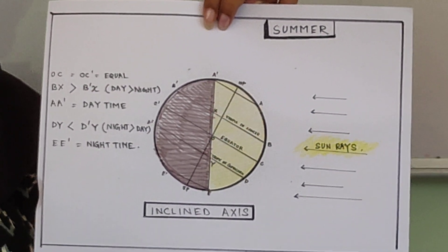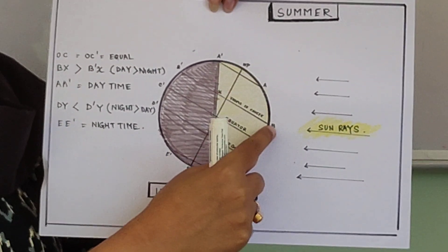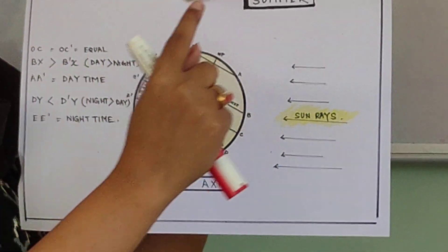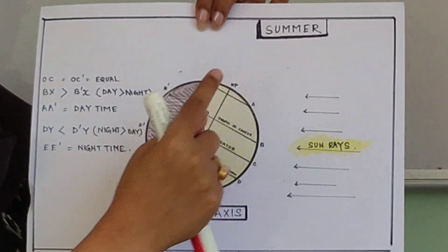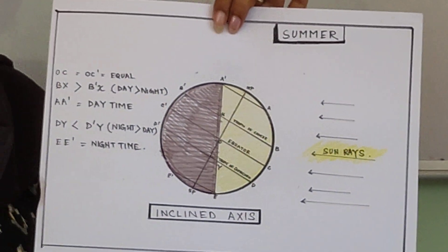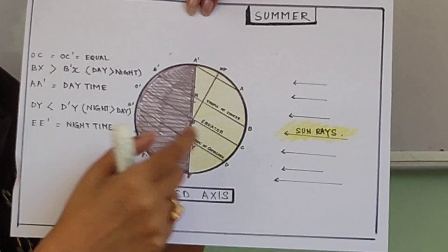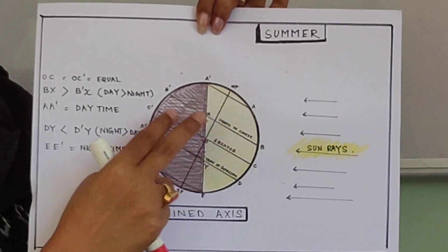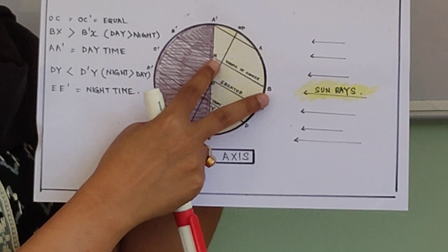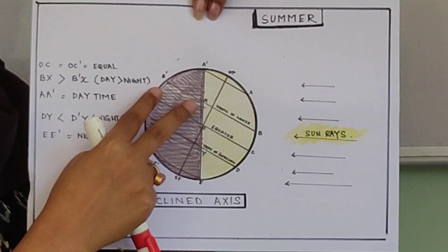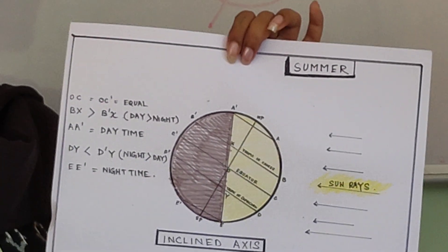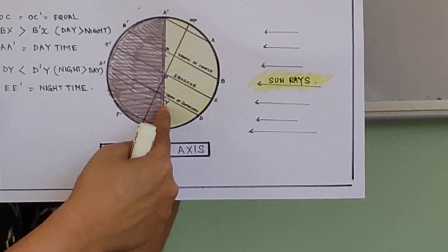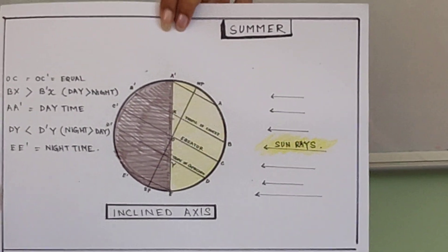Moving towards the northern side to the Tropic of Cancer, remember we are speaking about summertime, not wintertime — in wintertime the condition will be reversed. Here the sun ray covers distance X to B for daytime and B-dash to X for nighttime. The daytime portion XB is bigger, meaning daytime is longer than nighttime. So everywhere the length of daytime and nighttime is not the same — due to this inclined axis.